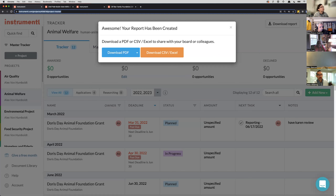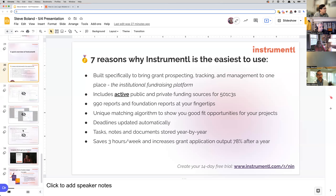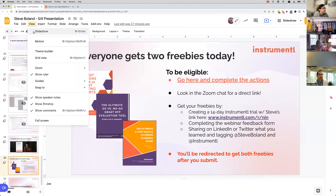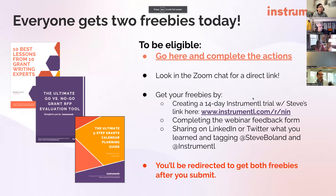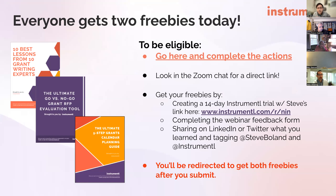We've got a ton of freebies for today. I have a feedback form in the Zoom chat — this is how we know what content you want to see. With that, let's start digging into some questions. Steve, the first question we had was from Deborah: 'How do you develop a logic model when the powers that be are reluctant to track data? I can't get numbers served, let alone what they ordered.'